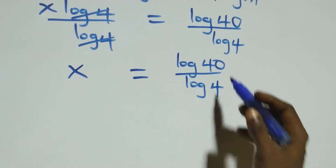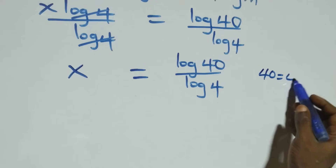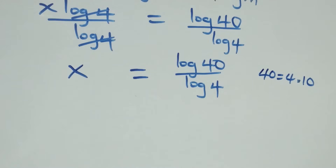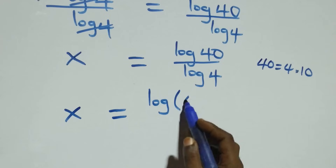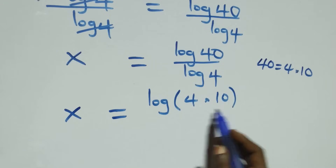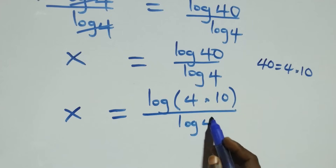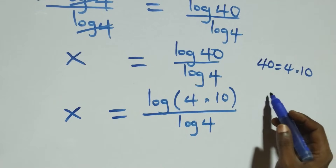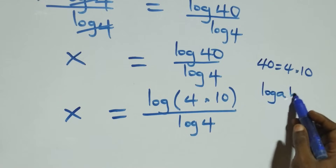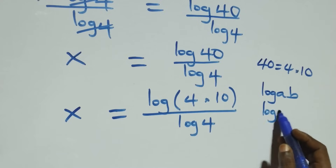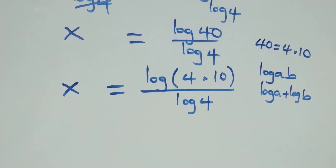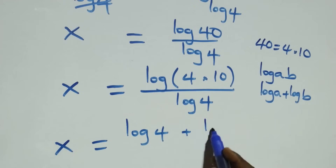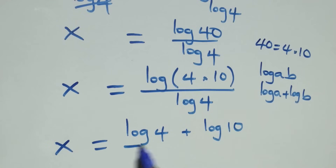From what we have here, we can express 40 as 4 times 10. So x equals log of 4 times 10 over log 4. This follows the log product rule: log of a times b is the same as log a plus log b. So this becomes x equals log 4 plus log 10, all over log 4.